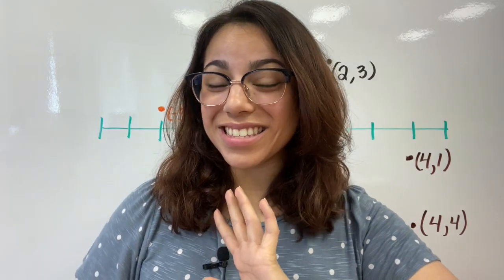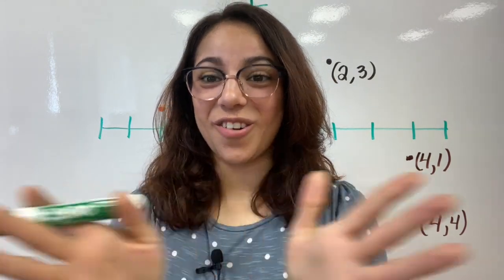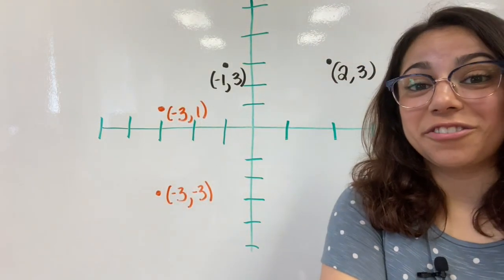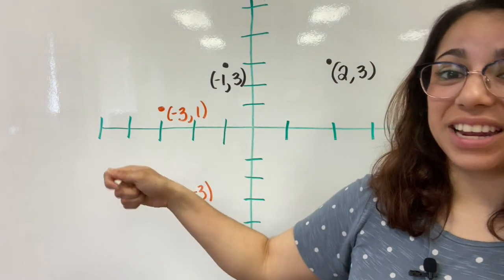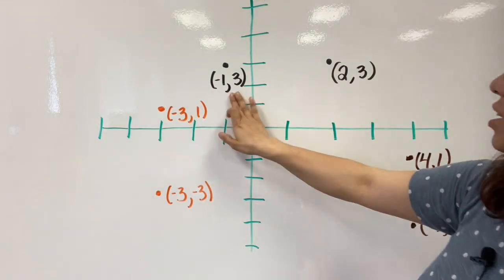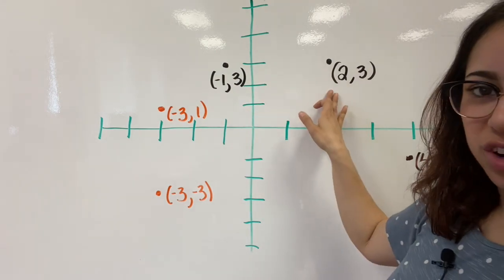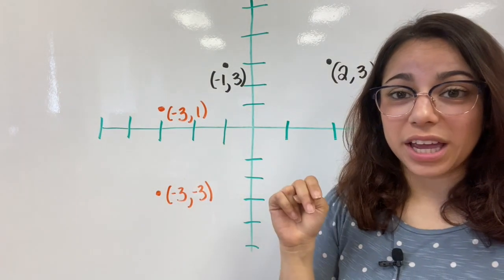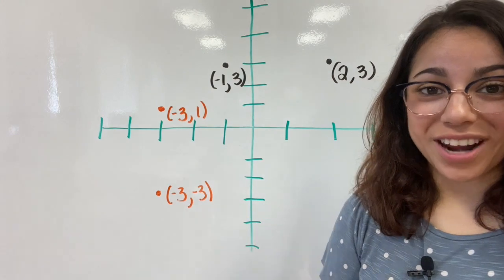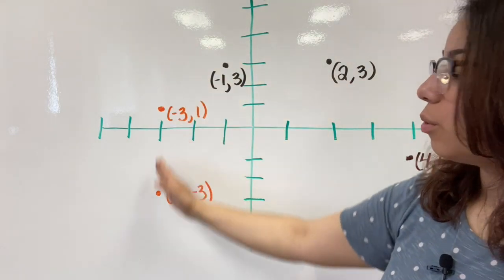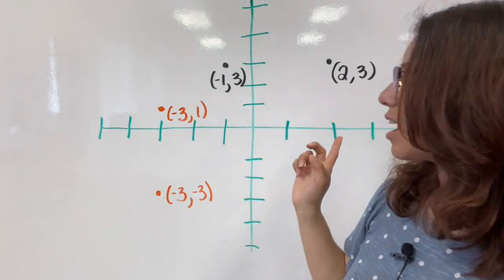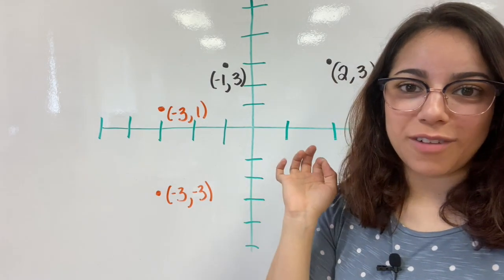Hello, parents. Hola, padres. Today I'm going to be showing you how to do the sixth grade lesson. Hoy les voy a enseñar cómo hacer la lección del sexto grado. I have been showing the kids how to find the relationship or the distance between points. Le he estado enseñando a los niños cómo encontrar la distancia entre puntos. I'm going to start with the ones in black, using the absolute value method.